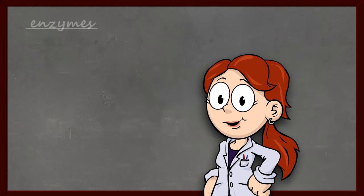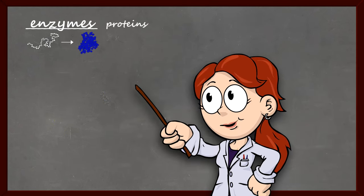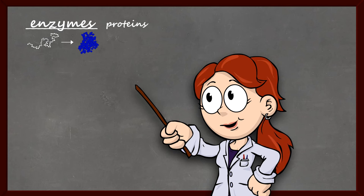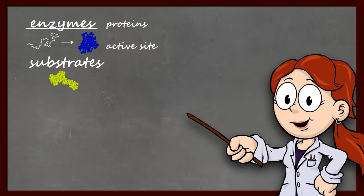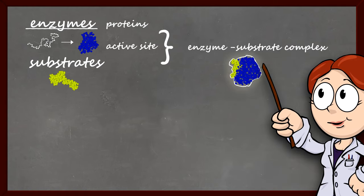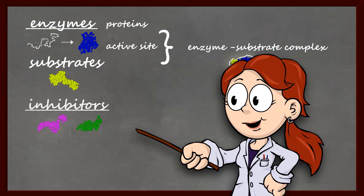So in conclusion, enzymes are really important proteins that function by speeding up the chemical reactions in our bodies. They interact with the substrates at their active site, forming an enzyme-substrate complex. A large part of the world's pharmaceutical industry relies on the fact that enzymes can be inhibited.